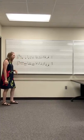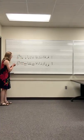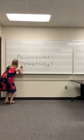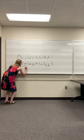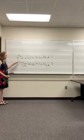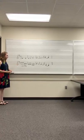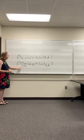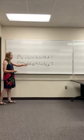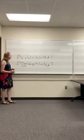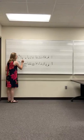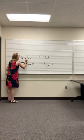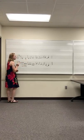We can also count them using numbers, representing each eighth note with a number. A measure with six sounds is counted: one, two, three, four, five, six. The dotted quarter notes each have three eighth notes, so we also count: one, two, three, four, five, six.